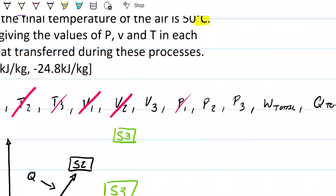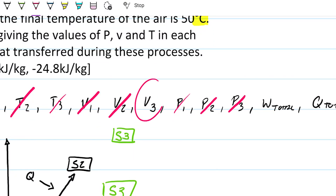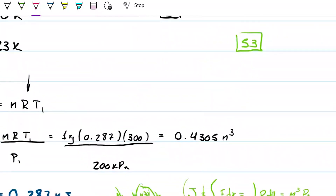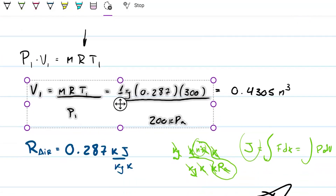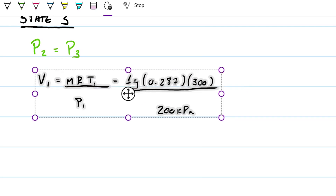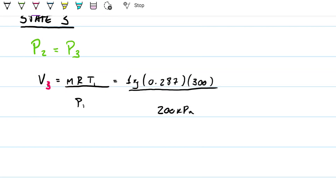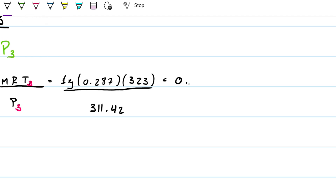So I can go ahead and eliminate pressure 2 and pressure 3. We can calculate volume 3 now because we have the temperature and the volume. We're going to do exactly the same thing we did before, accounting for the differences. Temperature 3 is given as 323 Kelvin, and the pressure we just calculated is 311.42, which gives us 0.2976.